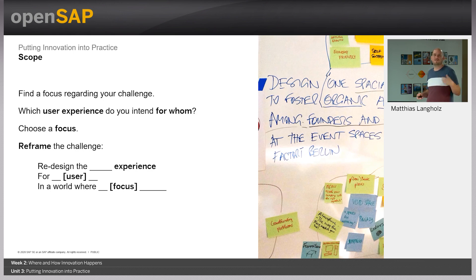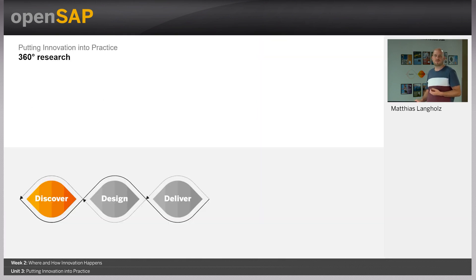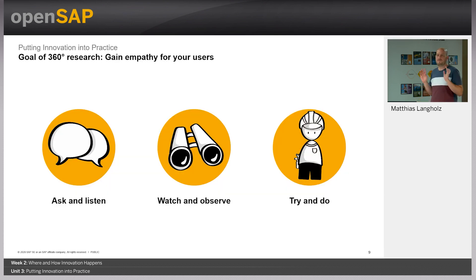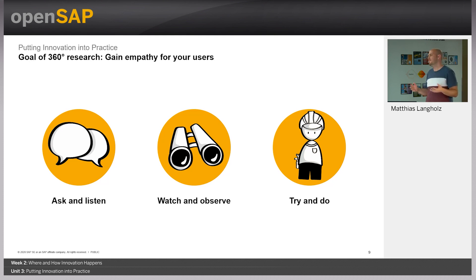After clarifying the challenge, you move to the next phase: 360-degree research. Here it's about understanding the users' needs and context, doing broad research to find what challenges and pain points exist. The core mindset is to be curious, to ask and listen — really talk to users and hear what they say. Be open-minded, watch and observe how they behave, identify flaws in existing processes, and get into the shoes of the users to experience the current situation.